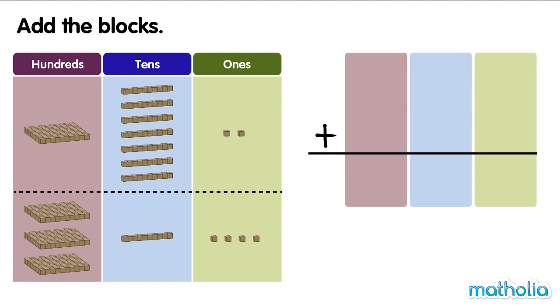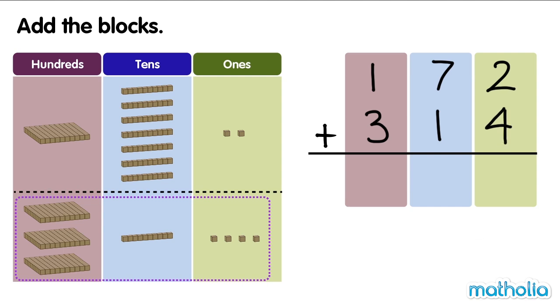Add the blocks. There are 172 blocks and 314 blocks. Let's add 172 and 314. Start by adding the 1s. 2 1s plus 4 1s equals 6 1s.